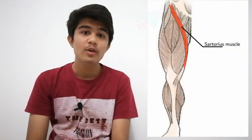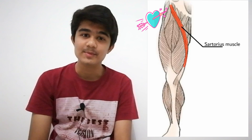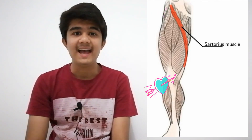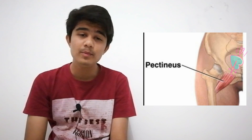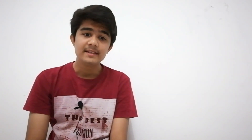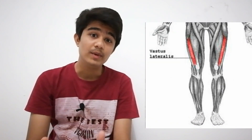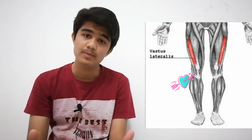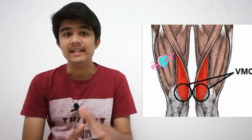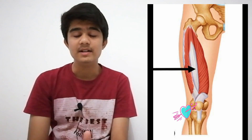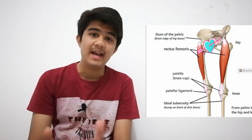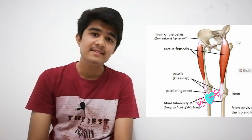Now look at the individual muscles. Sartorius originates from the anterior superior iliac spine; its insertion is medial to the tibial tuberosity, and its action is flexion, lateral rotation, and abduction of the thigh. Pectineus is a very small muscle originating from the pectineal line of the pubis and inserted on the pectineal line of the femur. Vastus lateralis originates from the linea aspera and inserts on the tibial tuberosity. Vastus medialis also originates from the linea aspera and inserts on the tibial tuberosity. Vastus intermedius originates from the front of the femur and inserts on the tibial tuberosity. Rectus femoris originates from the anterior inferior iliac spine and inserts on the tibial tuberosity.